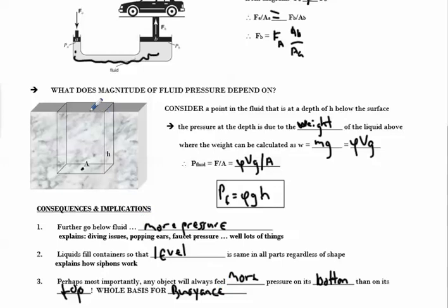In other words, let's say we did submerge an actual box in this water. This part of the box is further below the surface, so it's going to feel greater pressure than any part on top. So you're going to get a pressure difference, and we'll see why that's very, very important.